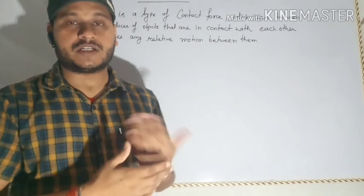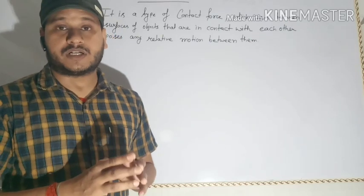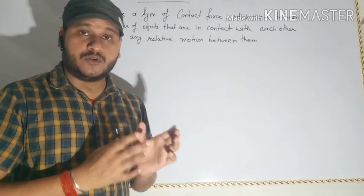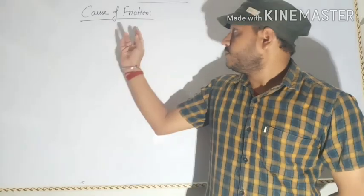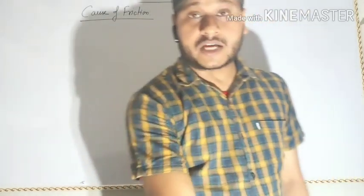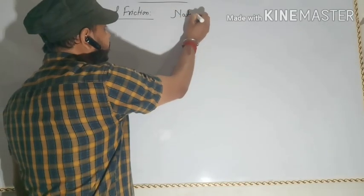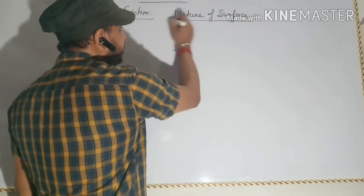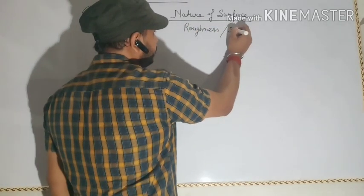Now let us try to understand what causes friction. The main cause of friction is actually the nature of the surface in contact — that is, the roughness or smoothness of the surface.